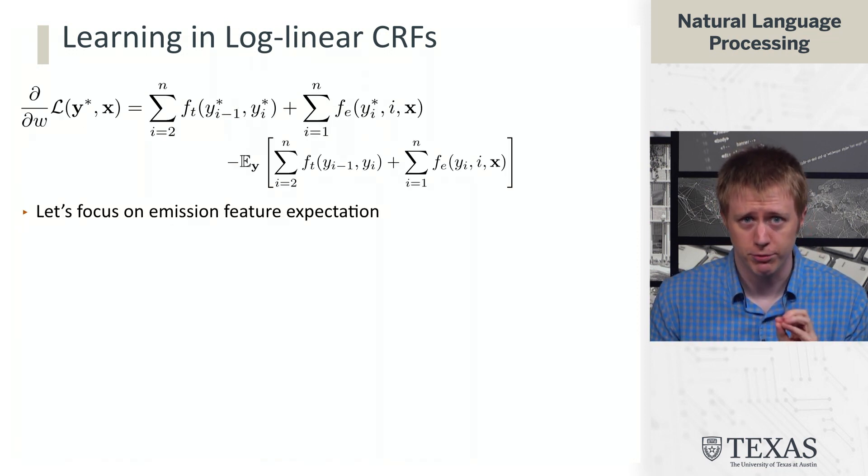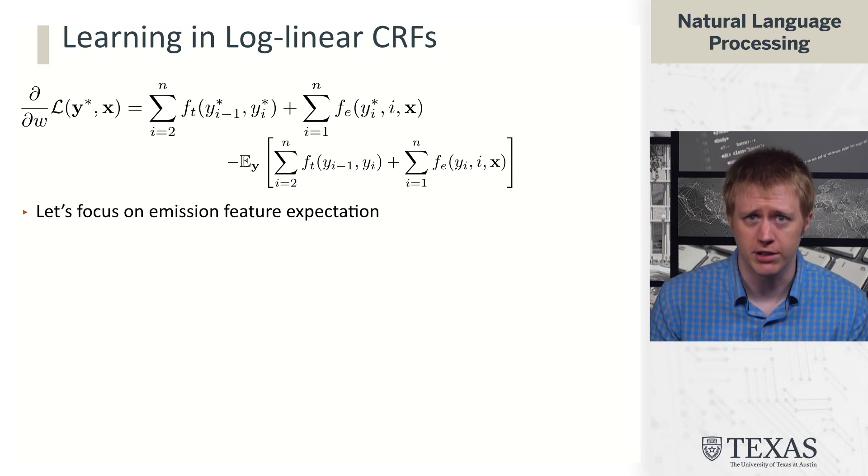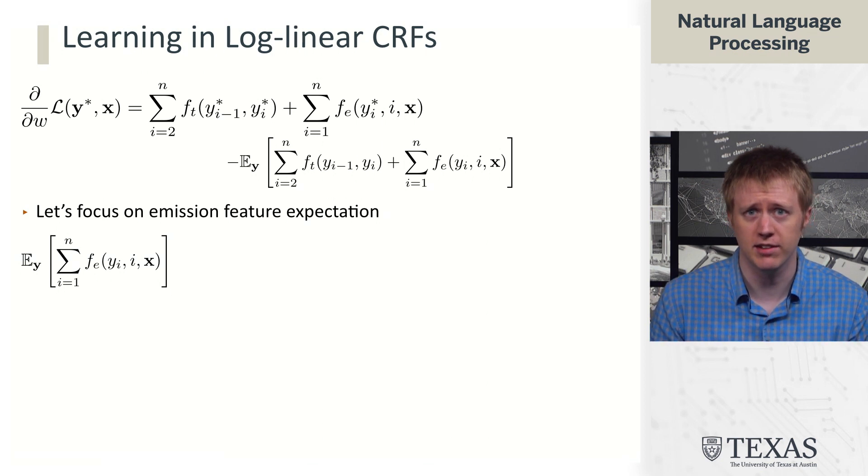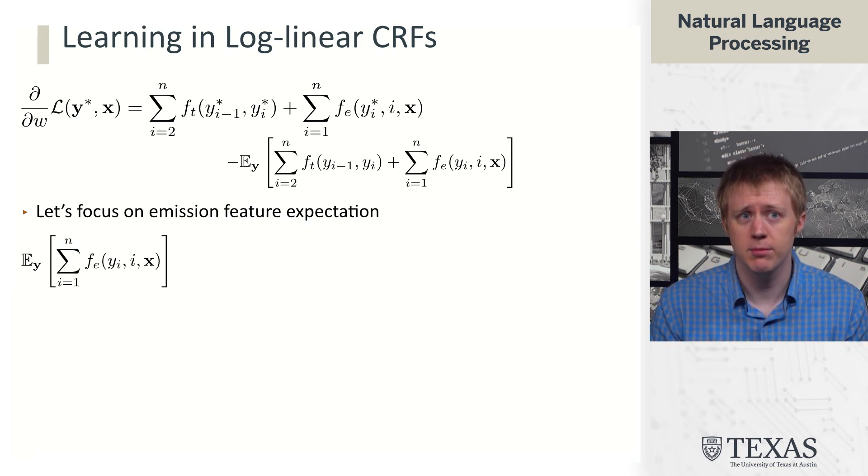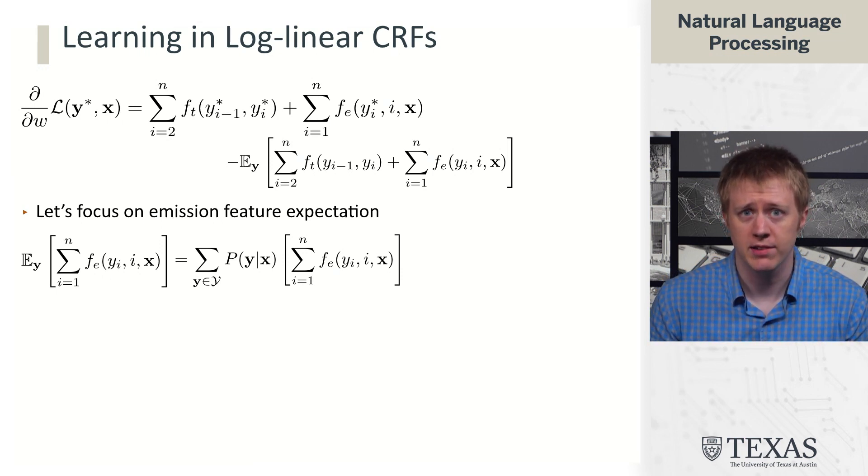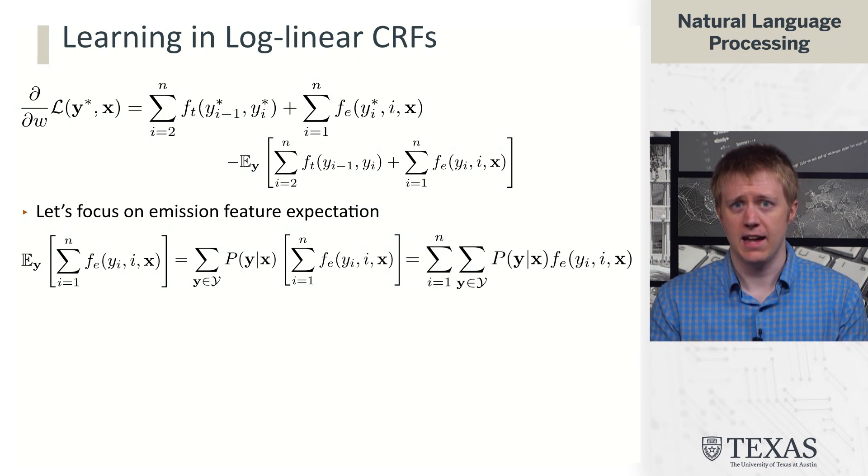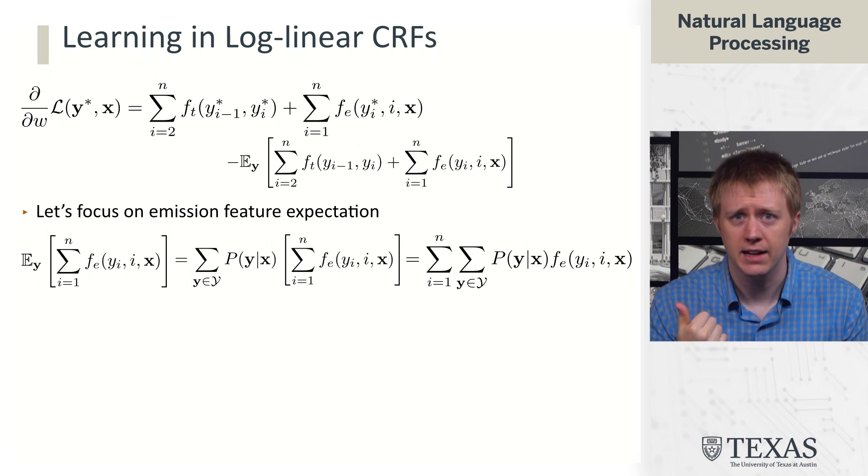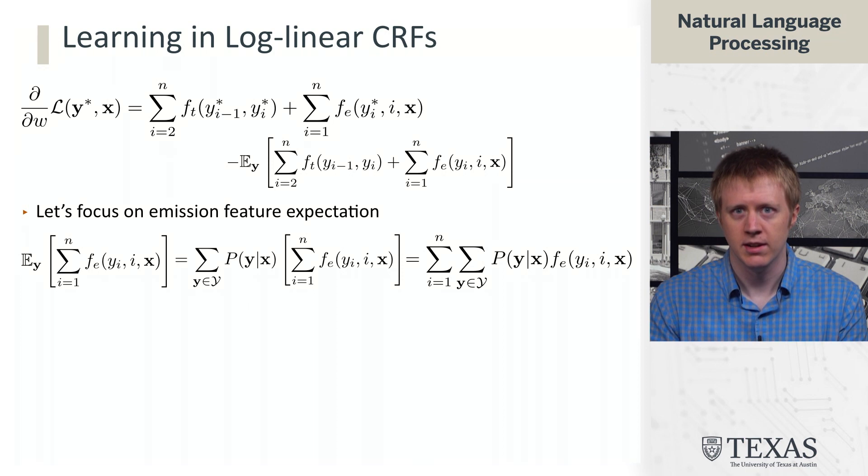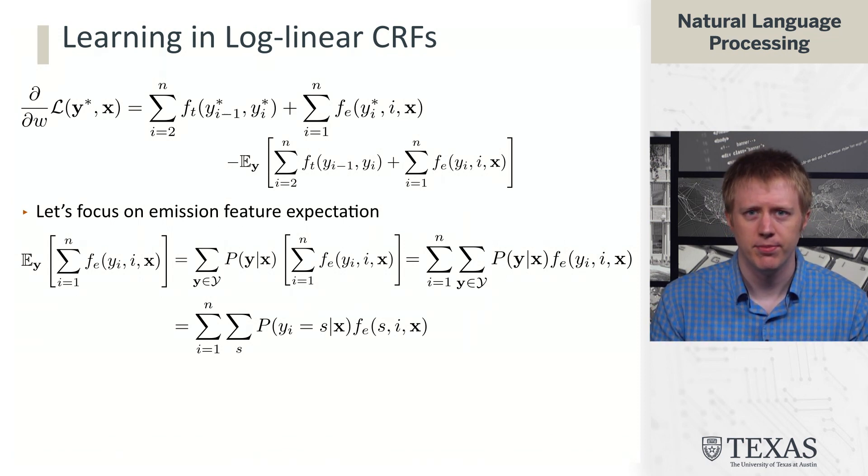So first we're going to rewrite this in a bit of a different form. So we're just going to forget about the transitions. Let's just focus on the emissions here. And let's think about what this expected value computation looks like in that case. So what I've done is I've extracted this last term, the sum over emission features, and we're taking the expectation of that with respect to y. And again, the distribution over y's that we have for this expectation comes out of the model. So we can rewrite it as this. We're summing over all possible y's. We're taking the model's probability, p of y given x, and multiplying that by this sum over emission features. And we can rewrite this by moving this sum over i's outside the sum over y's. So we've just kind of pushed the sums around here, kept everything the same.